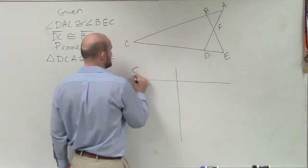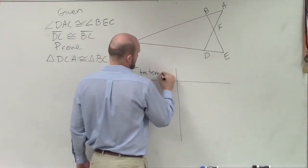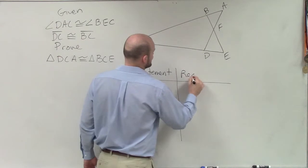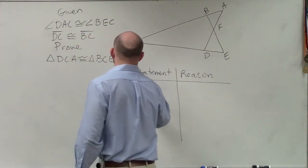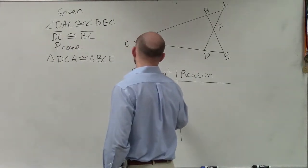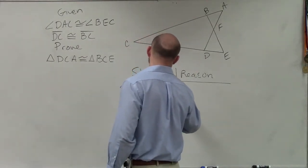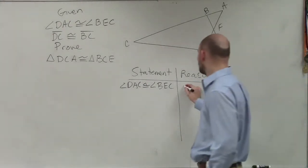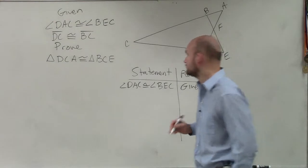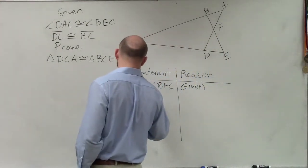Before we start thinking about stuff, let's just write it down so we have it in our proof. So we have angle DAC is congruent to angle BEC. And these are always nice to write in at the start because we know they have to be there, and we can just say the reason is given. We don't really have to think about it.